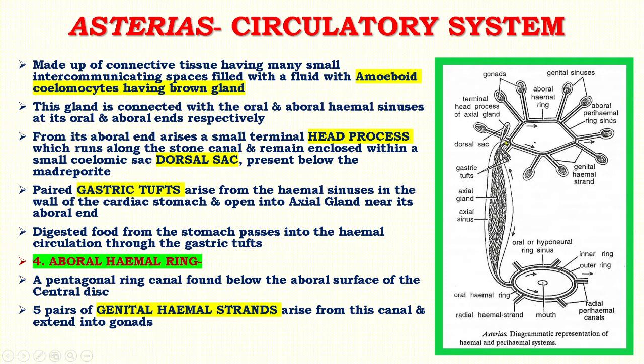The dorsal sac and gastric tufts can be seen in the diagram. The paired gastric tufts arise from the haemal sinuses in the wall of the cardiac stomach and open into the axial gland near its aboral end. Digested food from the stomach passes into the haemal circulation through the gastric tufts. The next part is the aboral haemal ring — a pentagonal ring canal found below the aboral surface of the central disc. Five pairs of genital haemal strands arise from this canal and extend into the gonads.